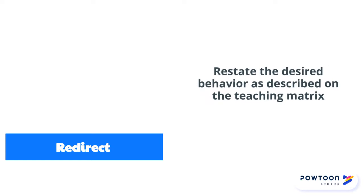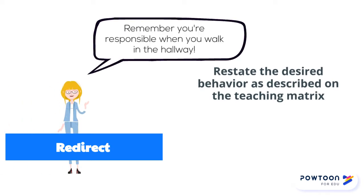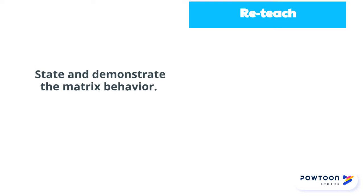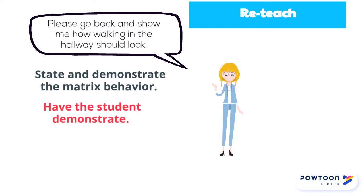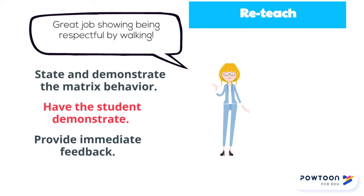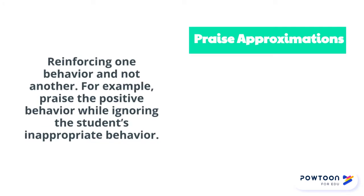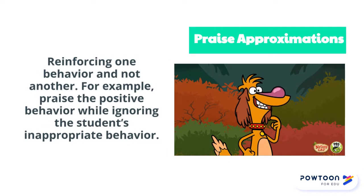When you redirect, you restate the desired behavior as described on your teaching matrix or your school-wide matrix. When you reteach, you state and demonstrate the matrix behavior, have the student demonstrate the behavior, and provide immediate feedback on their performance. When you praise approximations, you reinforce one behavior and not another — praising the positive behavior while ignoring inappropriate behavior.